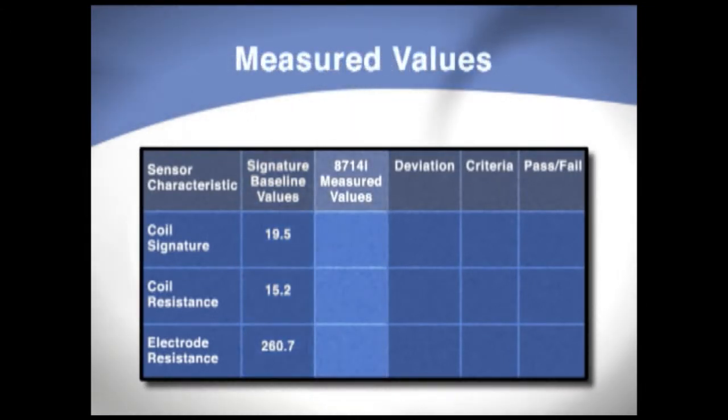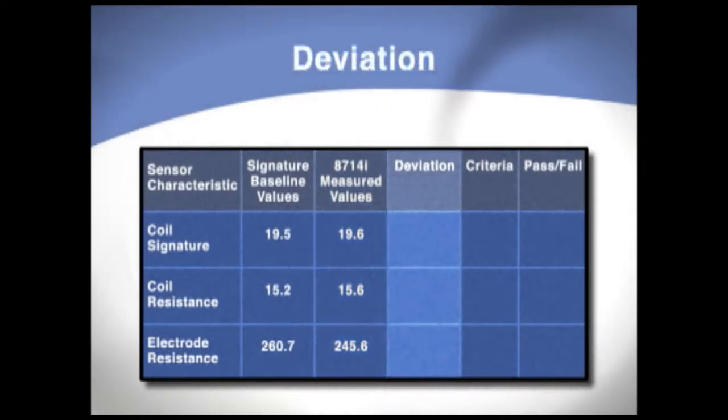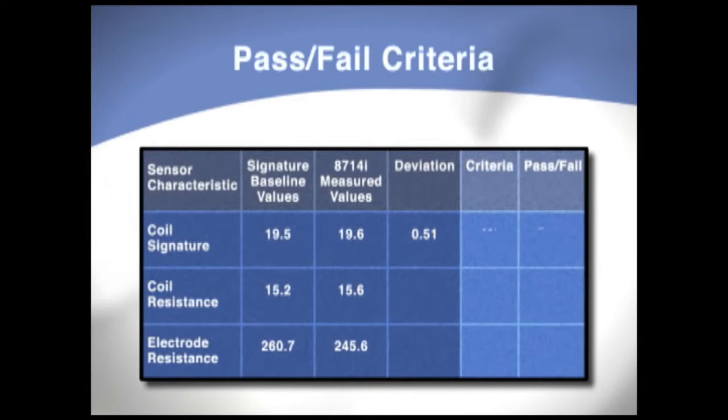Thereafter, every time the 8714I is run, it compares the measured values against the signature values and calculates the deviation. This deviation is then checked against your pass-fail criteria.